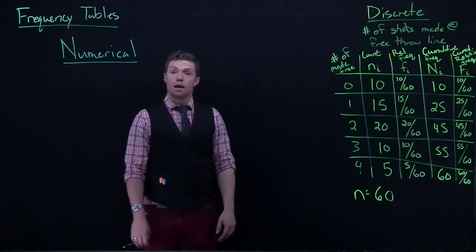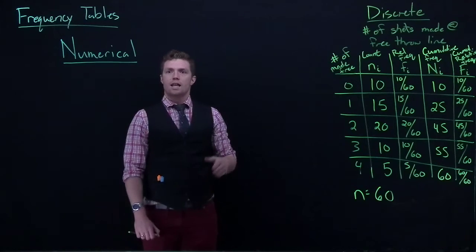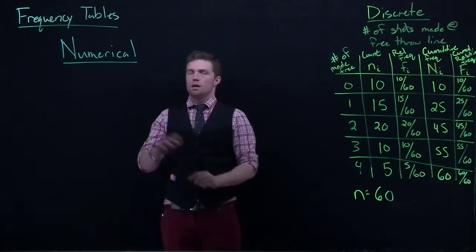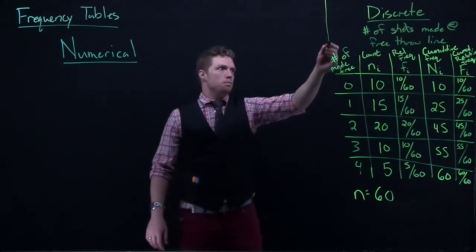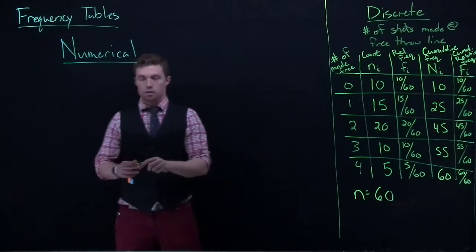This is how we could take our data and actually do a frequency table. It tells us how often things occur. We can look at individual events. We could look at an event or less. And that would be our cumulative frequency and our cumulative relative frequency. That's how we would handle it with a discrete piece of data. Numerical data that has specific steps. 0 to 1 to 2.